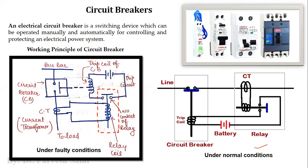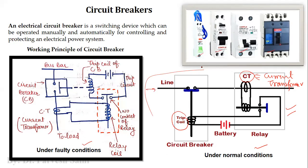There are two diagrams showing the working principle of circuit breakers under normal conditions and under faulty conditions. Under normal conditions, we have a current transformer, a tripping coil, a main line carrying the main supply, a battery to energize the tripping circuit, and a relay. Under normal conditions, the contacts are made and current flows in the line.